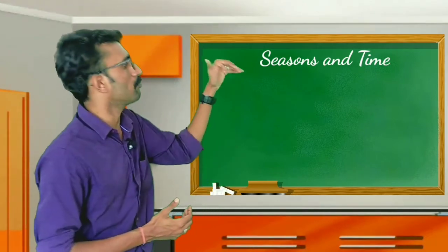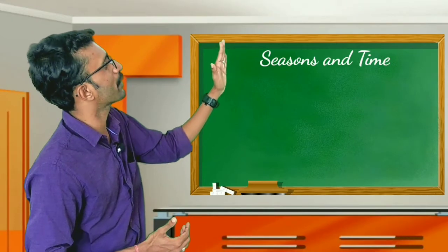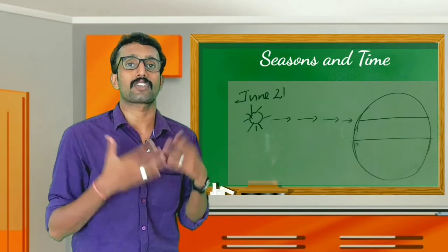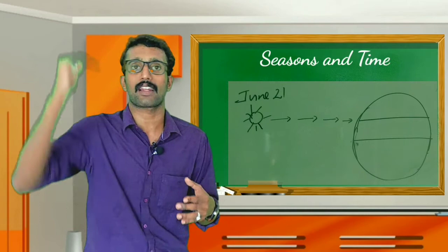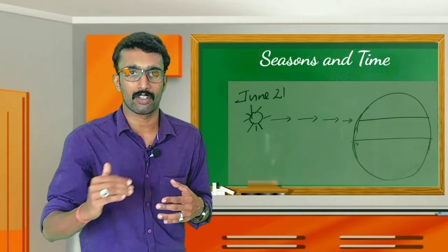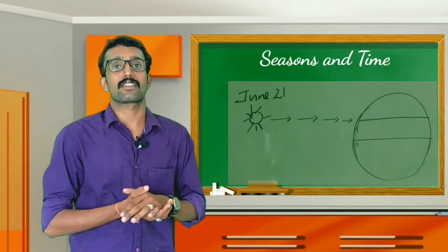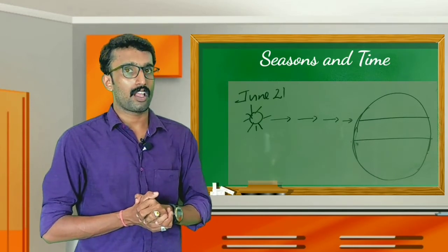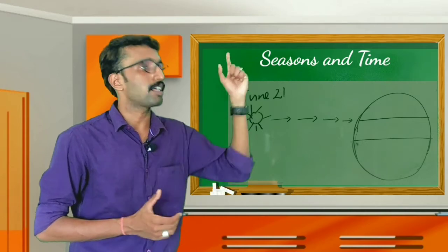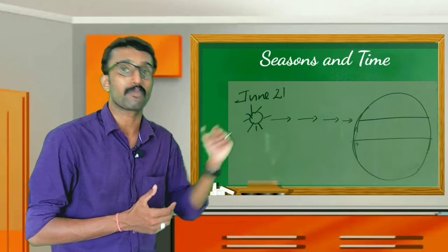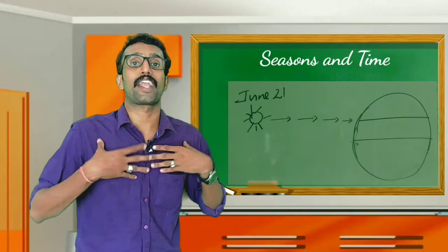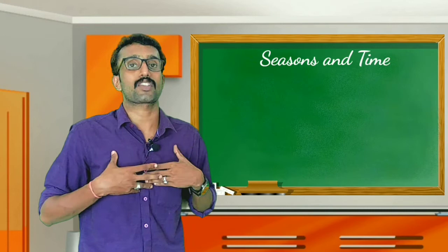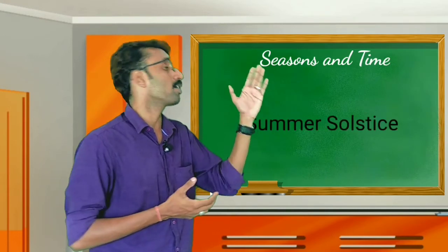After March 21st, the sun is apparently moving towards the northern side and reaches over the Tropic of Cancer. The sun reaches over the Tropic of Cancer on June 21st. On this day, the northern hemisphere is receiving more sunlight than the southern hemisphere. So the longest day is experienced in the northern hemisphere and the longest night is experienced in the southern hemisphere. This day is known as the summer solstice.